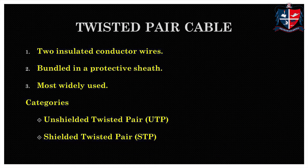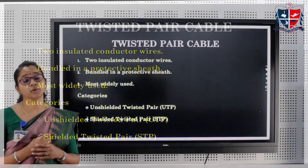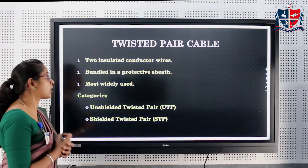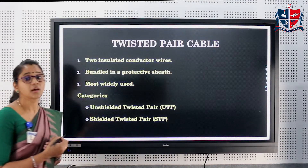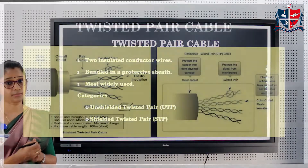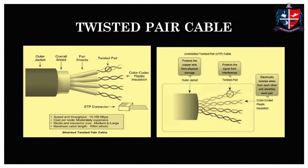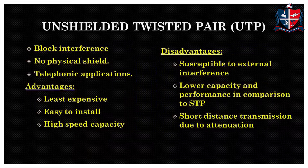Twisted pair cable has two insulated cables covered in a protective sheet, and it is a commonly used one. It has two categories: unshielded twisted pair and shielded twisted pair. In this diagram, you can see that unshielded twisted pair has only a single outer jacket, which is only for protecting the copper wire from physical damage. In the case of shielded twisted pair cable, you can see three layers of shield: outer jacket, overall shield, and pair shields, to protect the copper wires from interference and other damages.